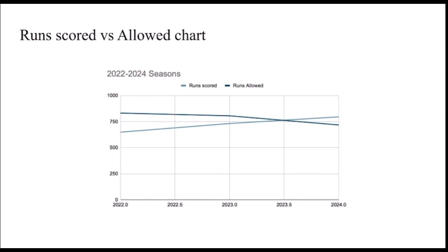Here's a runs allowed versus runs scored chart. I made this because it's a good representation that scoring more runs and allowing fewer runs is a direct correlation to winning. As you can see, we start out with fewer runs scored and end up with more, and we start out with more runs allowed and end up with less. Thank you.